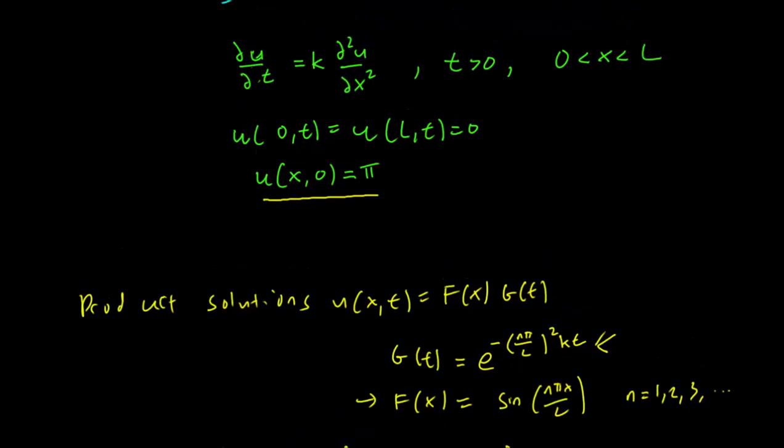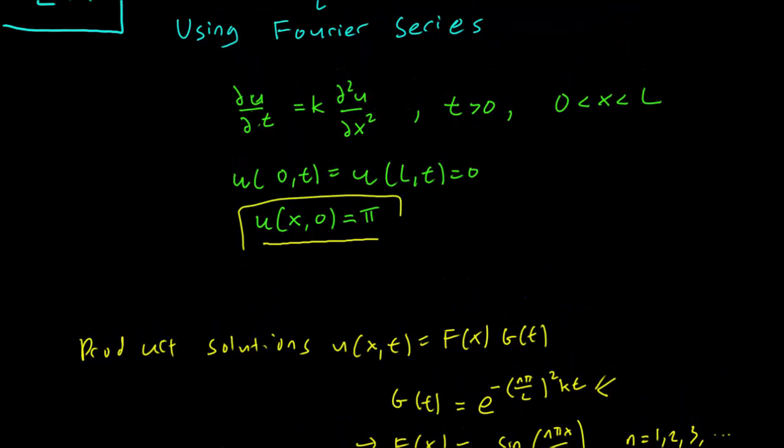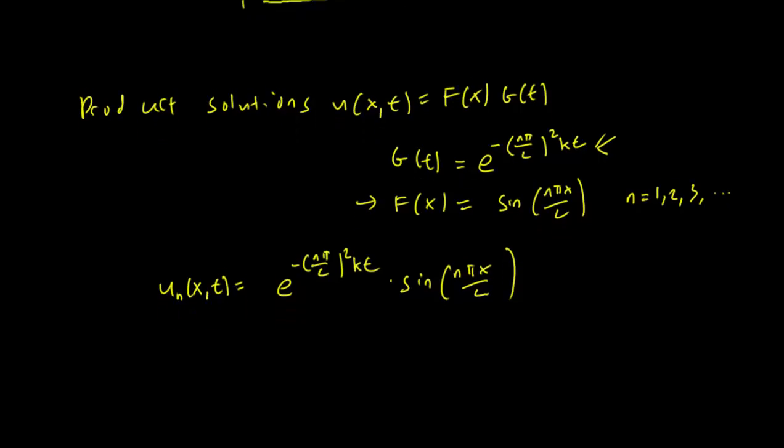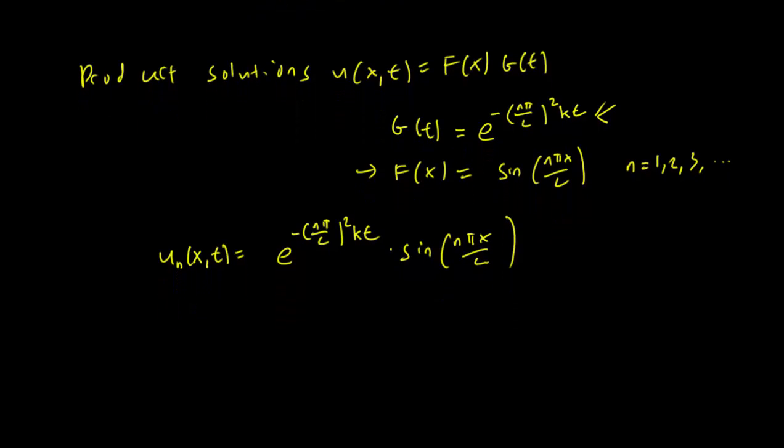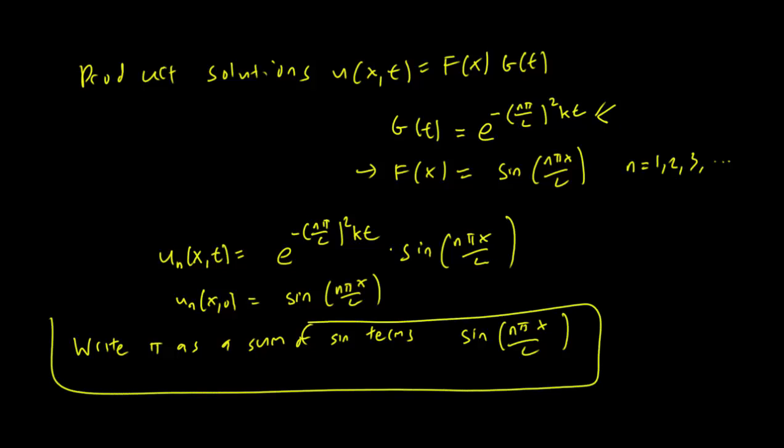So we need to figure out how we can get the initial condition u equals pi. We have to figure out how to write pi as a sum of sines of the form sine(n pi x over L). Because if you may recall, taking the initial conditions setting t equals zero will turn these product solutions into sine terms of the form sine(n pi x over L). So we need to use Fourier's theorem here.